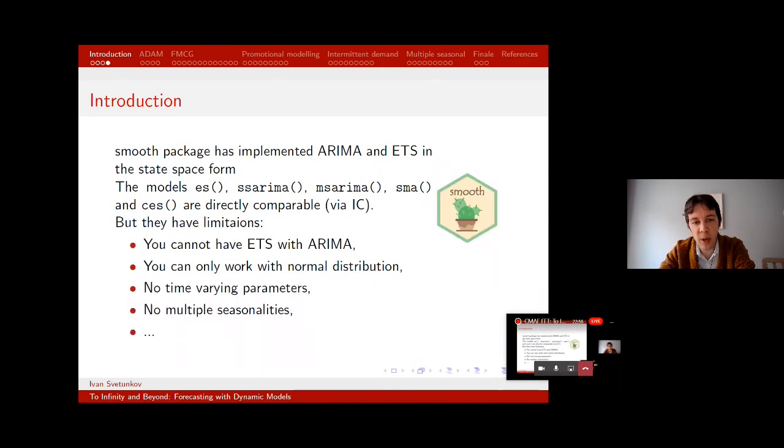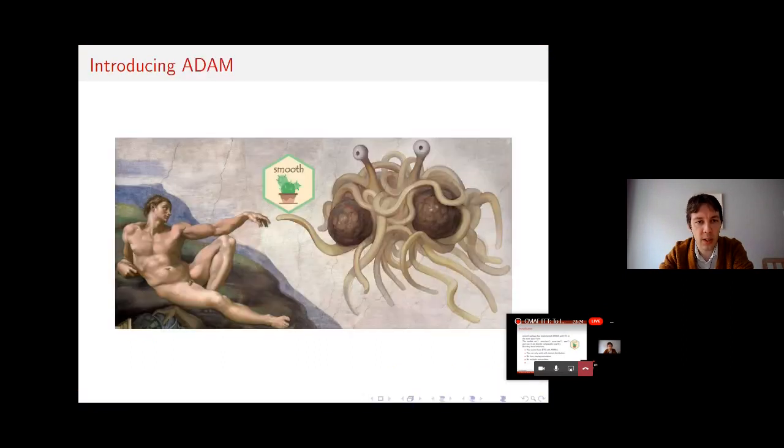You don't, we don't have, we don't have time varying parameters in those models and we cannot deal with multiple seasonality. So we actually, if we have multiple seasonality, we would go and use TBATS or double seasonal Holt-Winters. So something different, something completely different. And I thought that having all these different elements, it would make sense to unite them in some more general framework. So this is what ADAM is for. And this is ADAM.